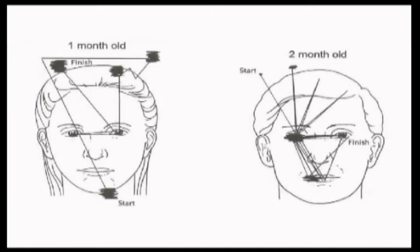Look at this video. A one-month-old child is looking at the mother's face, and you see from the start point how the eye fixation changes and finally stops at some point. In the other image, a two-month-old child is looking at the father, and you see from the start point how the fixation point changes and finally stops somewhere. This is how infants look at their parents.